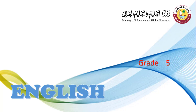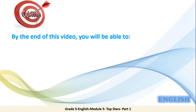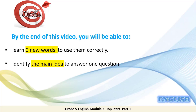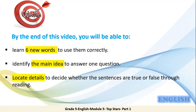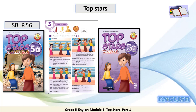Hello grade 5 students and welcome to this new lesson. Today we have Top Stars Part 1 in Module 5. Let's start with the objectives. By the end of this video, you will be able to learn six new words and use them correctly, identify the main idea to answer one question, and locate details to decide whether the sentences are true or false through reading. You will find this lesson in your students book page 56 and in your workbook page 48.